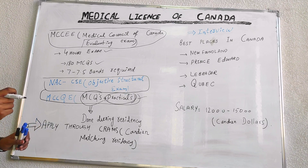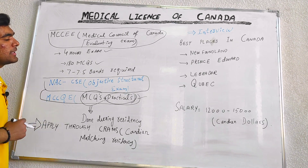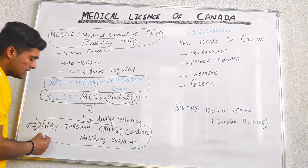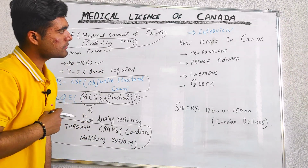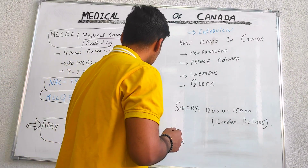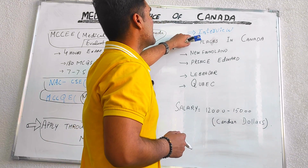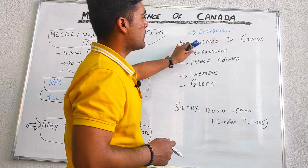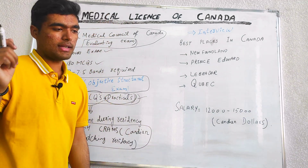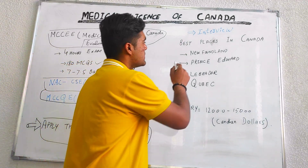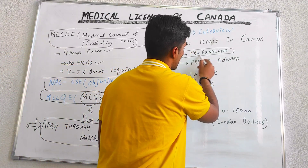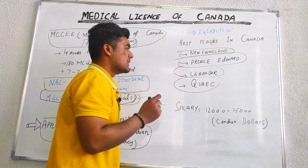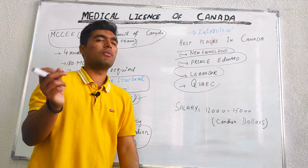We can also apply through CaRMS, the Canadian Residency Matching Service. After getting approval from CaRMS and the Medical Council, there is an interview process. Some of the best places for getting residency in Canada are Newfoundland, Prince Edward Island, Labrador, and Quebec. We have to register in one of these.